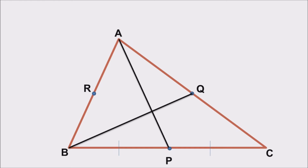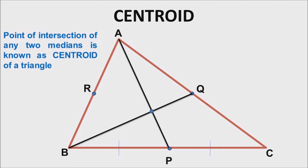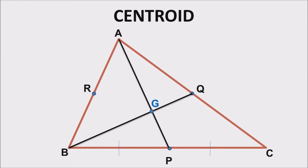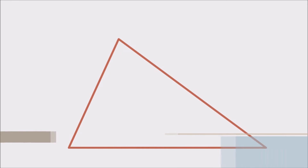These two medians intersect at a specific point, and this point of intersection is defined as the centroid. The point of intersection of two medians is known as the centroid of a triangle. The centroid is generally labeled as G. If we plot the third median, you can see it also passes through the centroid.